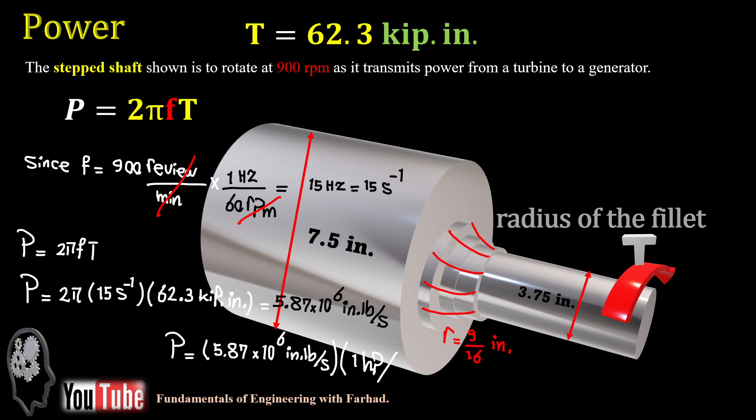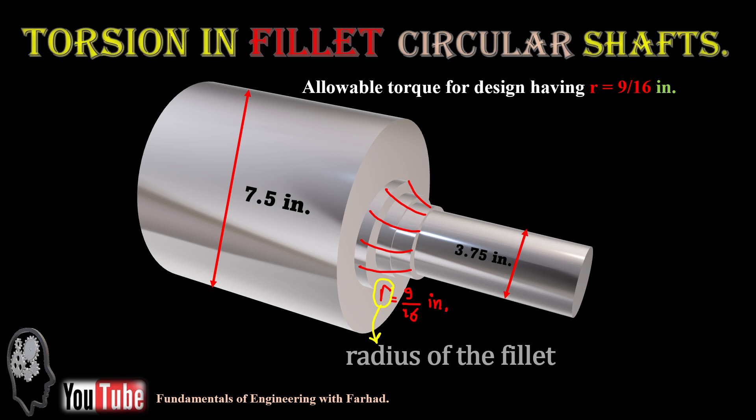And if you convert that to horsepower, it gives us 890 horsepower in terms of power which is transmitted from this configuration if it's rotating at 900 rpm.